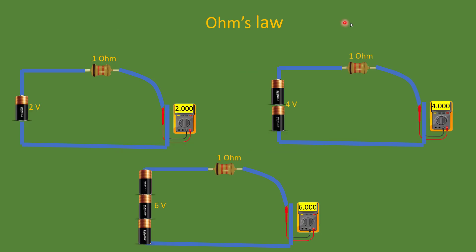Let's look at three scenarios. First, a 2-volt battery is connected to a 1-ohm resistance. If you put a multimeter across its ends, the current reads 2 amps. As per the equation V equals I times R, current is 2 amps. Now let's increase the voltage by connecting two 2-volt batteries in series — the combined voltage is 4 volts, and the current will be 4 amps.